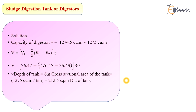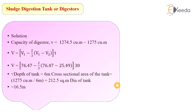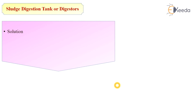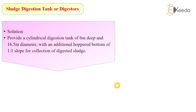Assuming the depth of the tank as 6 meters, the cross-sectional area equals total volume divided by depth = 1275 / 6 = 212.5 m². From this, the diameter of the tank is calculated as 16.5 meters. Therefore, we will provide a cylindrical digestion tank of 6-meter depth and 16.5-meter diameter, with an additional hopper bottom of 1:1 slope for collection of digested sludge.